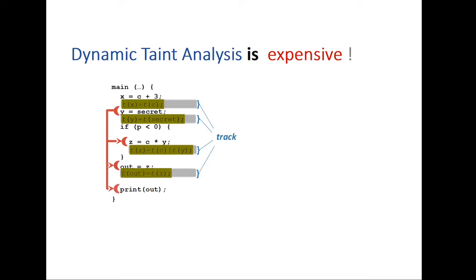According to a reputable research work, which was conducted by Newsom in 2005, a conventional dynamic taint tracking system can slow down the program performance up to five times, which is significant. And that explains why, despite its usefulness, this approach is not widely popular between software companies and developers.